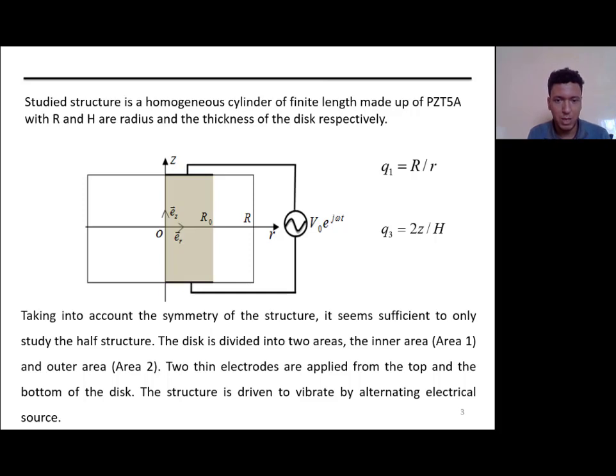Taking into account the symmetry of the structure, it seems sufficient to only study the half structure. Here, the disk is divided into two areas, the inner area and the outer area. Two thin electrodes are applied from the top and the bottom of the disk.